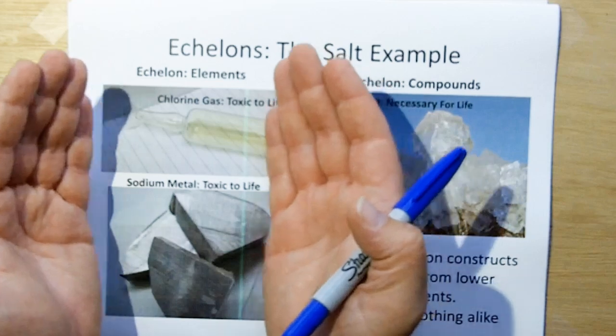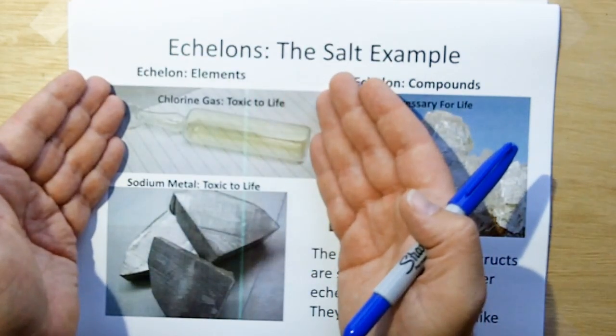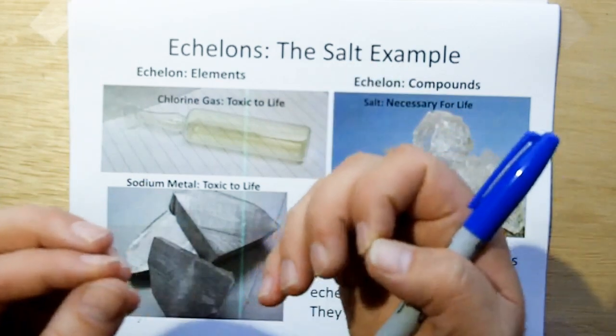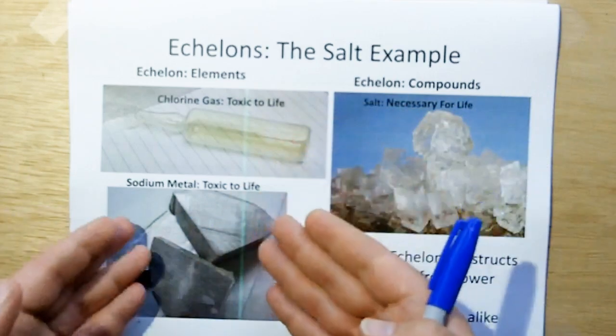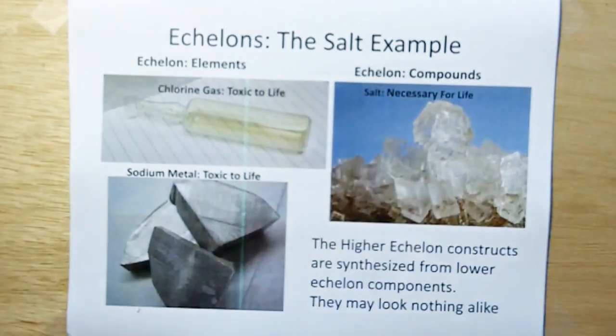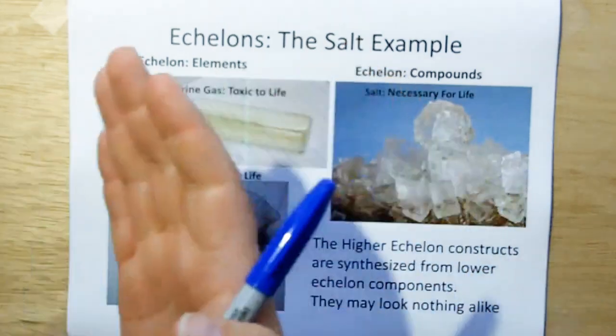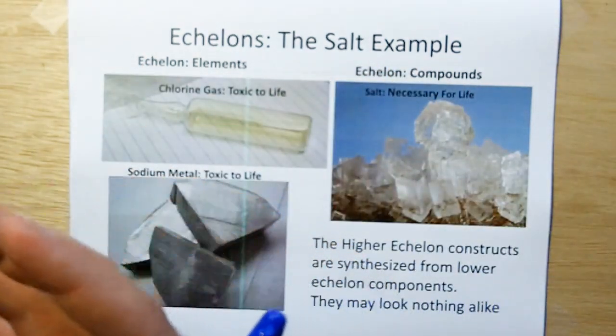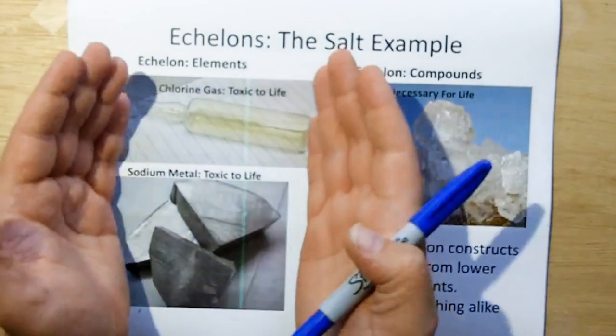And if you go to the echelon below this, chlorine is synthesized by neutrons, protons, and electrons. And the same three things, protons, electrons, and neutrons, rearranged a different way, give you a completely different material here. And these look nothing like protons, neutrons, and electrons. So as you go down the echelons, each lower echelon may look, will most probably not look like the echelon that it synthesizes.